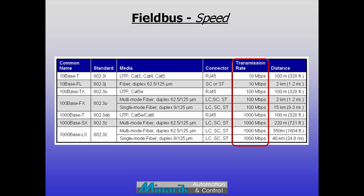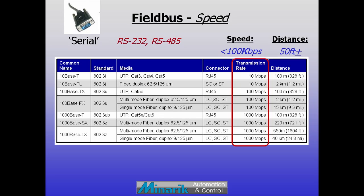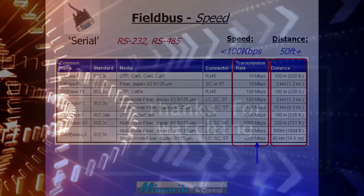Communication speed can be a primary design factor. Low speeds of early serial communications often limited capability. Rates in megabits per second and long transmission distances are now common and sufficient for most machine applications.